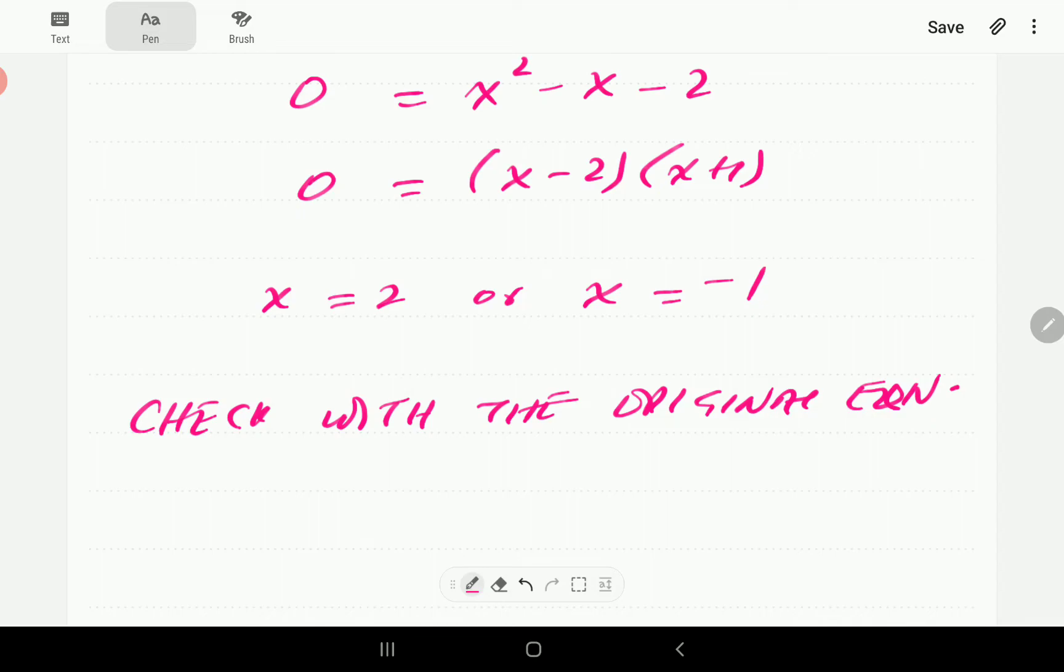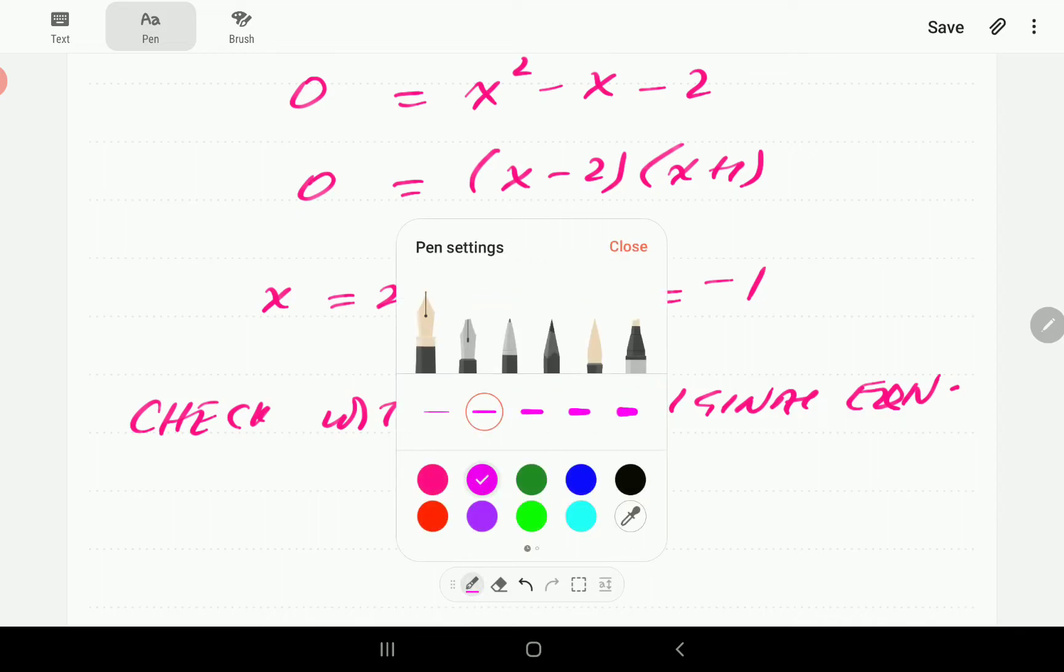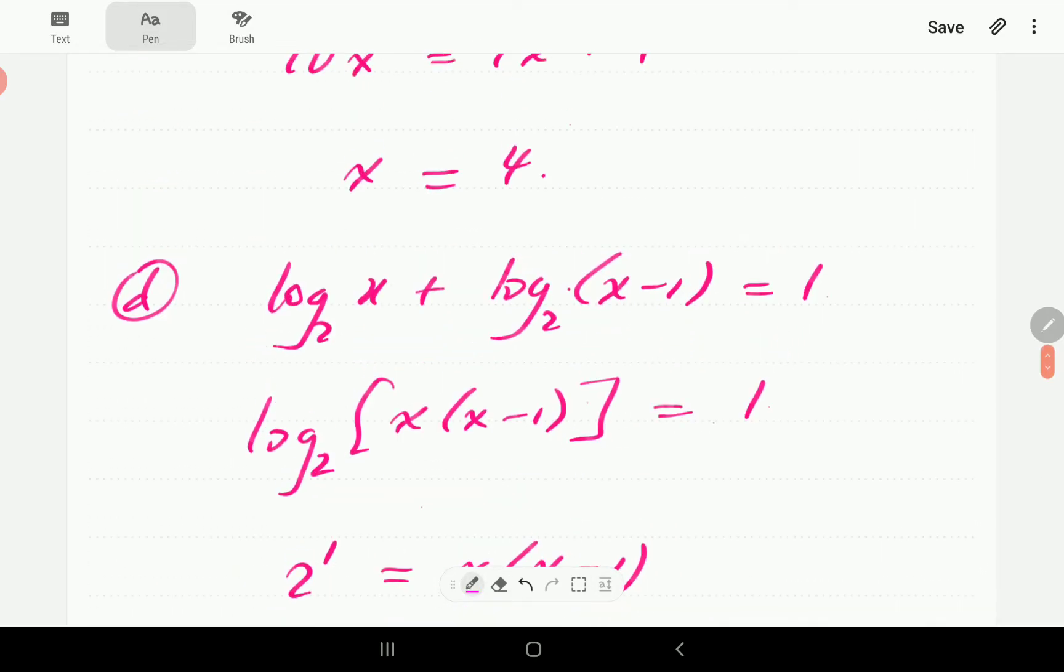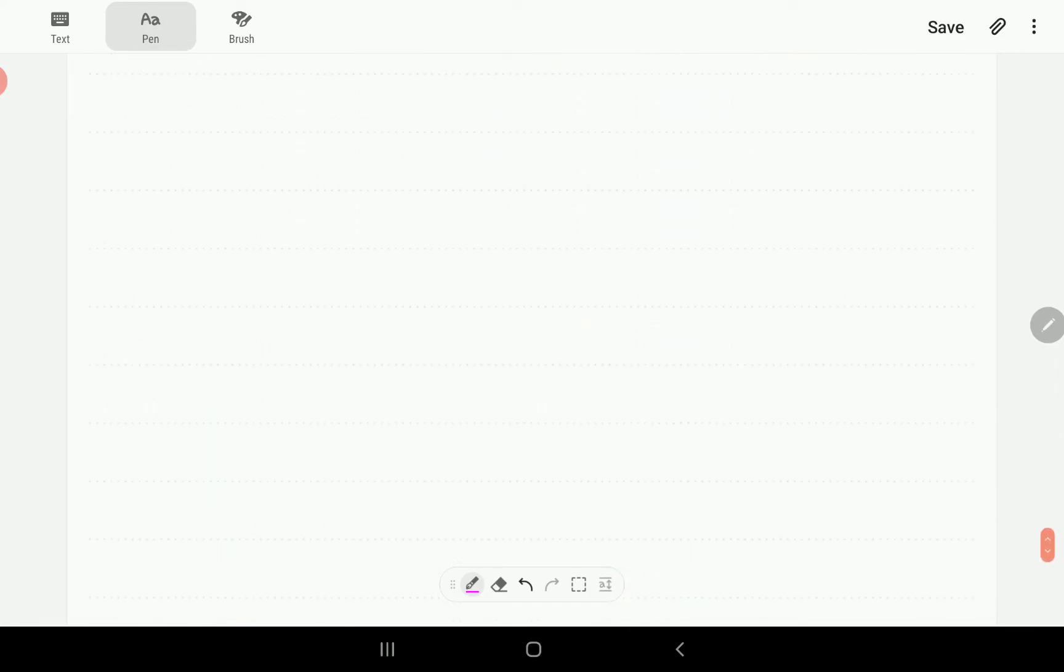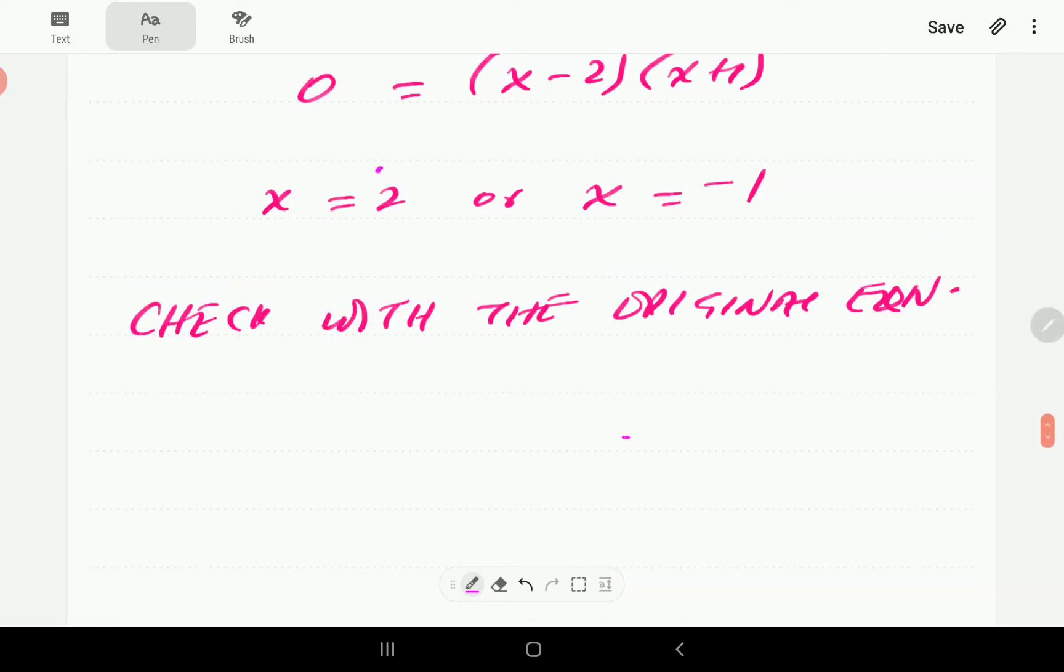So if we start with x is equal to 2, if we plug it into the original equation, it's going to be log 2 base 2 plus log 2 minus 1 is 1. Log 2 base 2 here is 1, log 1 is 0. So x equals to 2 looks to work just fine.